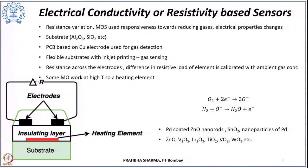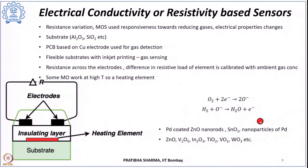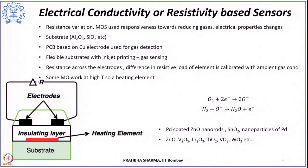In the presence of hydrogen, the adsorbed oxygen combines with hydrogen to form water, liberating electrons. This increases conductivity or decreases resistance in N-type materials, while resistance increases in P-type materials. Typical examples include palladium coated on zinc oxide nanorods, tin oxide, or palladium nanoparticles. Other usable oxides include vanadium oxide, indium oxide, titanium oxide, and tungsten oxide.